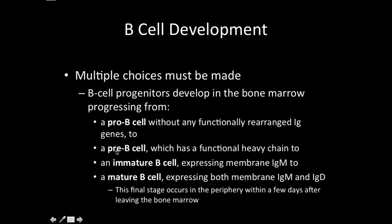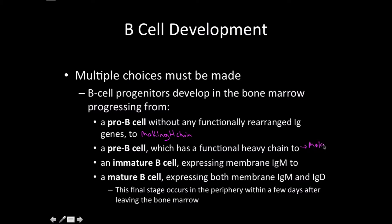Once we're at a pre-B cell, we already have the heavy chain gene made, and we're going to start making a light chain. So pro-B cell is about making H chains, and pre-B cell is all about making the light chain. These come together to make an immature B cell expressing a membrane-bound IgM.